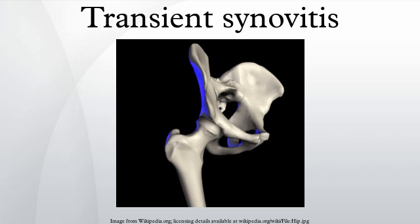Transient synovitis is a diagnosis of exclusion. The diagnosis can be made in the typical setting of pain or limp in a young child who is not generally unwell and has no recent trauma. There is a limited range of motion of the hip joint. Blood tests may show mild inflammation. An ultrasound scan of the hip joint can show a fluid collection. Treatment is with non-steroidal anti-inflammatory drugs and limited weight bearing. The condition usually clears by itself within 7 to 10 days, but a small group of patients will continue to have symptoms for several weeks. The recurrence rate is around 17%, most of which is in the first 6 months.